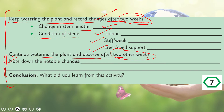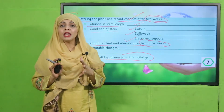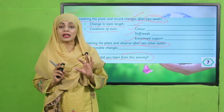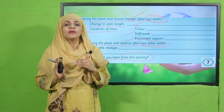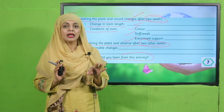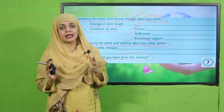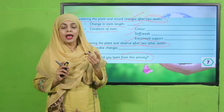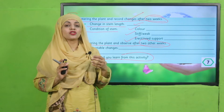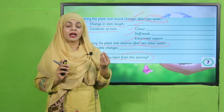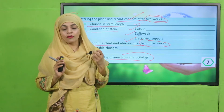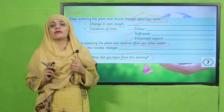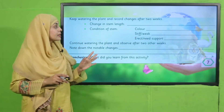What did you learn from this activity? You can share it with your classmates or write it in your notebook. We learned that when we sow seeds into the soil, they need soil, water, air, and sunlight to grow. After some time, a tiny seedling comes out of the soil, and after a few weeks we notice changes in stem length, shape, color, and leaves — this is growth in the plant.